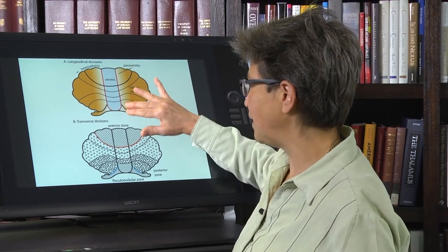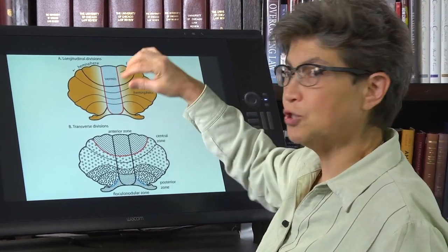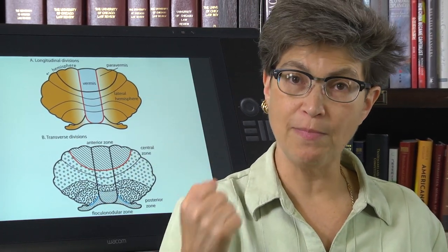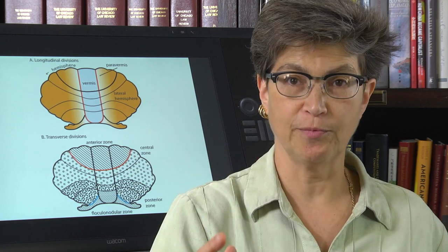The paravermis, on the other hand, has more to do with appendicular movements. So, reaching and grasping are the main jobs of the paravermis.